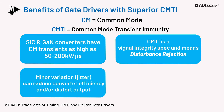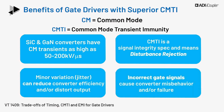Such propagation delay variation can reduce the converter's efficiency and/or distort the output. But the bigger impact of transmission errors is shoot-through, such that the complementary device in a half-bridge configuration may turn on, leading to converter failure. This damage can be catastrophic.